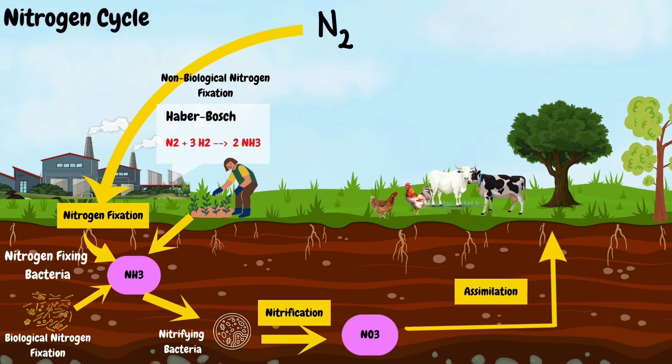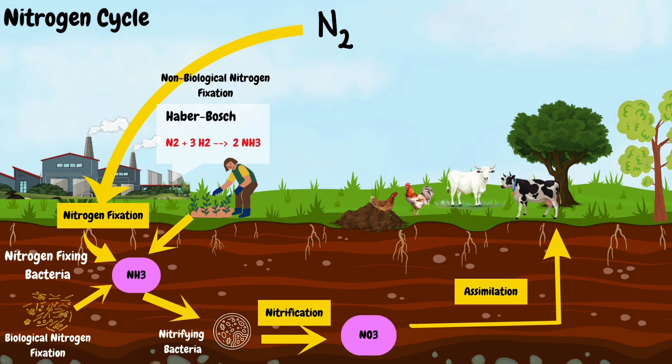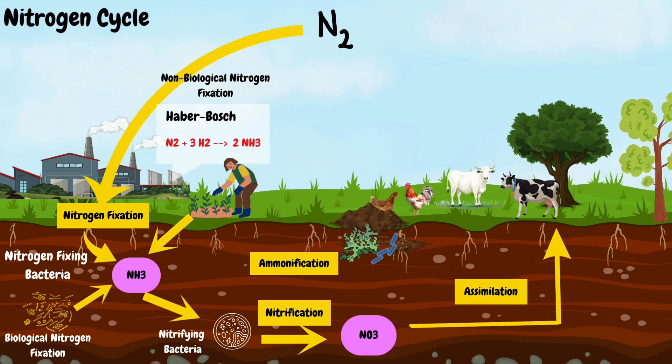When plants and animals die or excrete waste, the organic nitrogen compounds are broken down by decomposers such as bacteria and fungi through a process called ammonification. This results in the release of ammonia or ammonium ions back into the soil, which is again recycled.